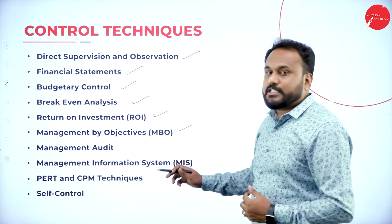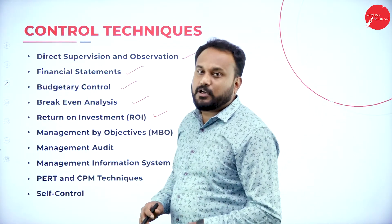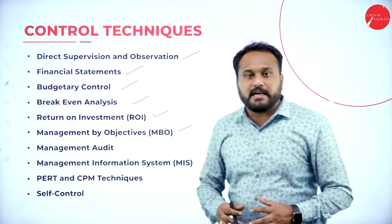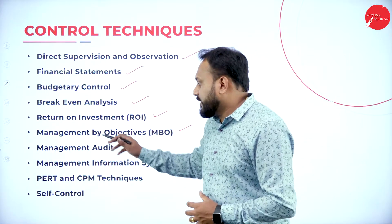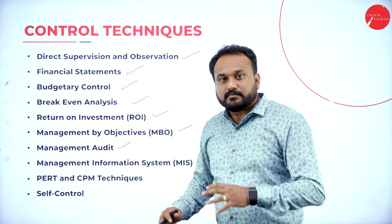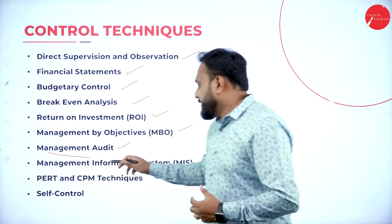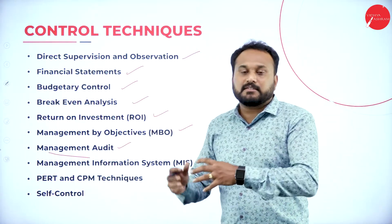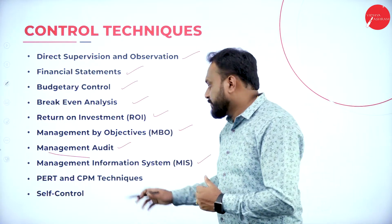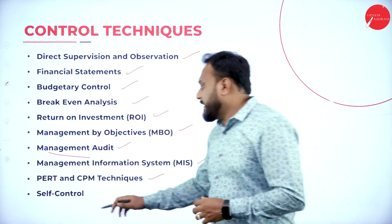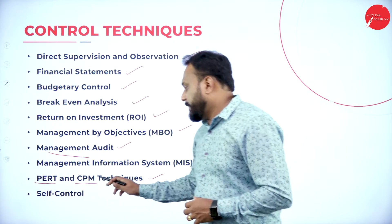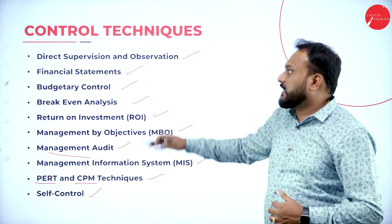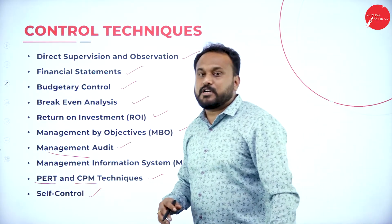Management by objectives — I have taken a special session about MBO, and you are supposed to go and watch it. I mentioned it in the first chapter itself. Then we have management audit — audit done by the management. Management information system — I have done MIS as well. And we have the new concept of PERT and CPM. The last one is self-control. So these are the controlling techniques which you are supposed to write.